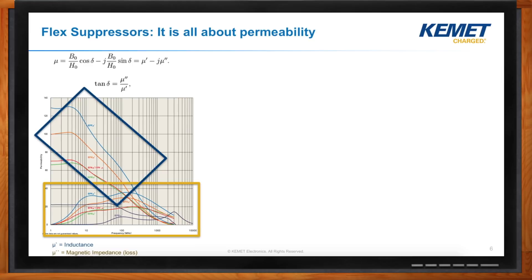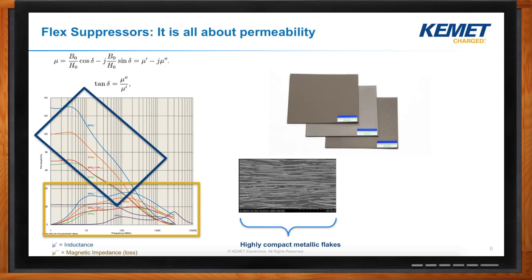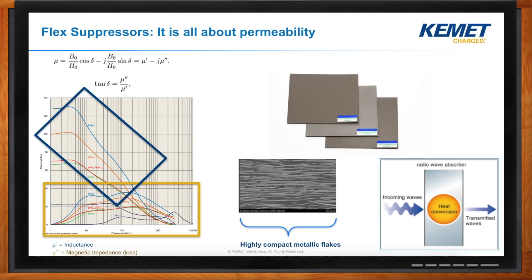So, our flex suppressors are flexible sheets of polymer material that have highly compact metal flakes suspended in that material. So, what that does is any incident incoming wave within a certain bandwidth, of course, will be absorbed by the flex suppressor material and converted to a small amount of heat.